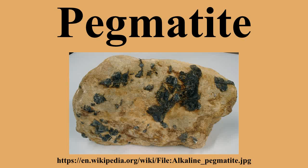Pegmatites are economically important because they often contain rare earth minerals and gemstones such as aquamarine, tourmaline, topaz, fluorite, apatite, and corundum, along with tin and tungsten minerals. Pegmatites are the primary source of lithium, either as spodumene or lepidolite. The primary source for cesium is pollucite, a mineral found in its own pegmatite. The majority of the world's beryllium is sourced from non-gem quality beryl within pegmatite. Tantalum, niobium, and rare earth elements are sourced from a few pegmatites worldwide, notably the Greenbushes pegmatite. Bismuth, molybdenum, and tin have also been won from pegmatite.